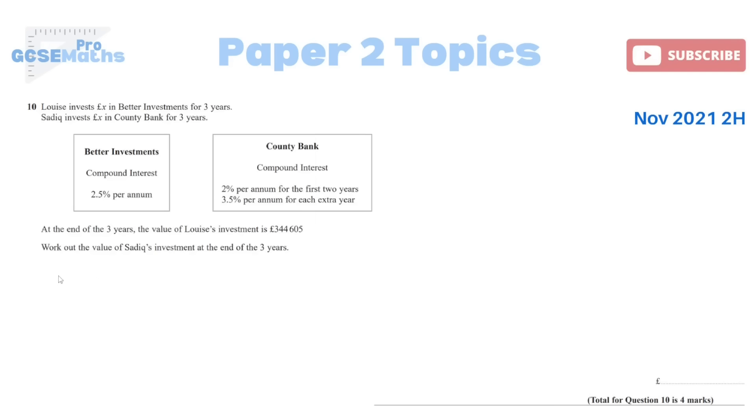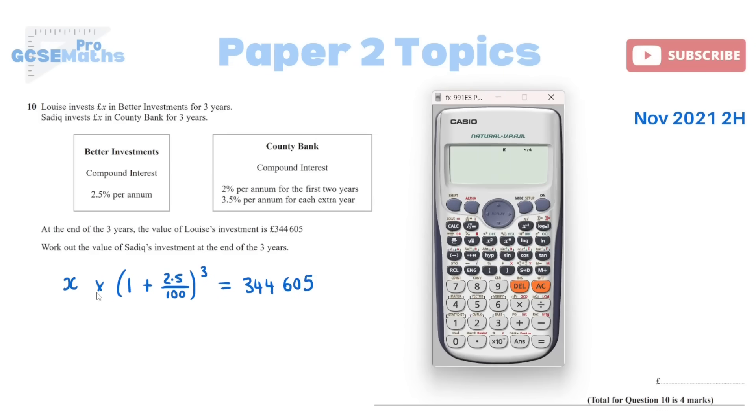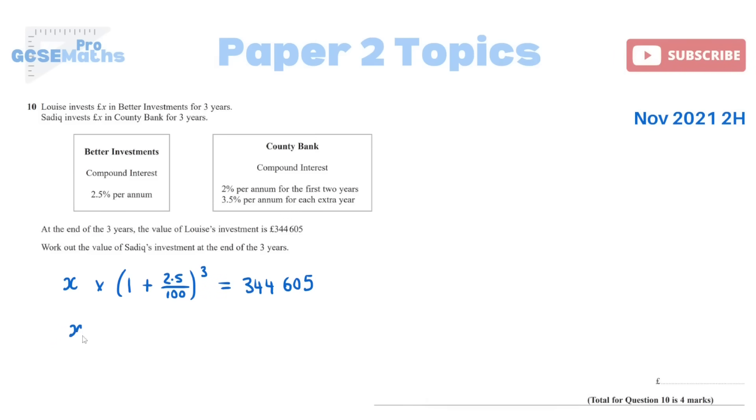Let's focus first on Louise. She took her principal amount, which was X, multiplied it by 1 plus the 2.5% compound interest, so make that into a decimal, divide by 100, and then to the power of the time, which was 3 years. Now we actually have the answer, that's the £344,605. So all I need to do is just rearrange this to find X. All I would need to do is just divide everything by this bracket to rearrange that equation. And that gives me £320,000, which seems like a reasonable number. So X is £320,000.